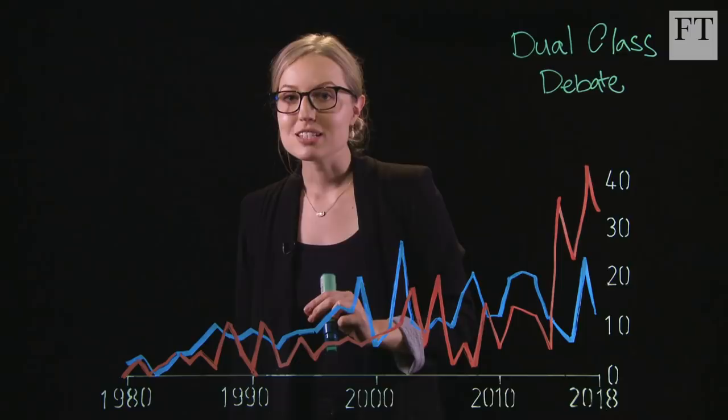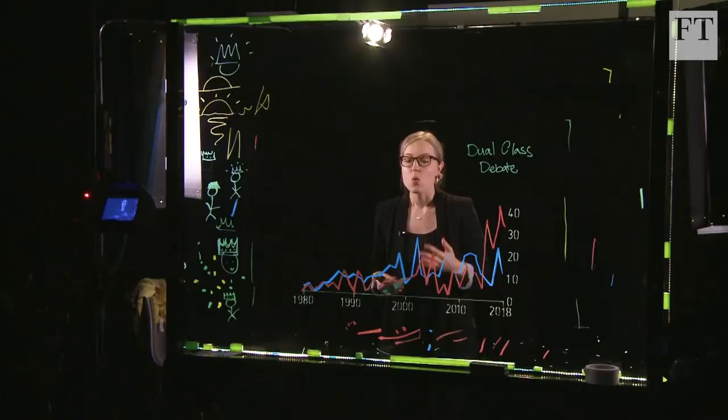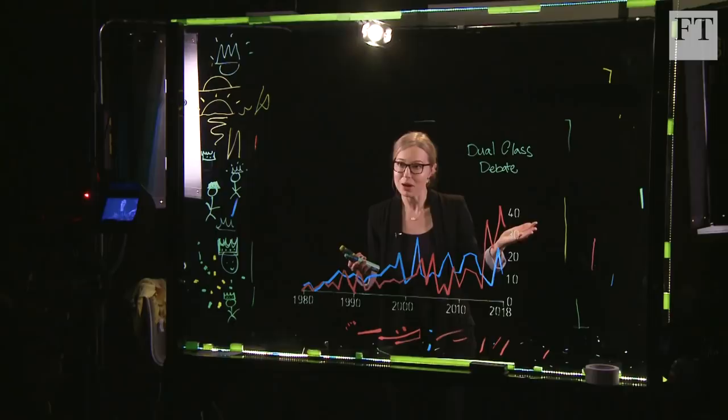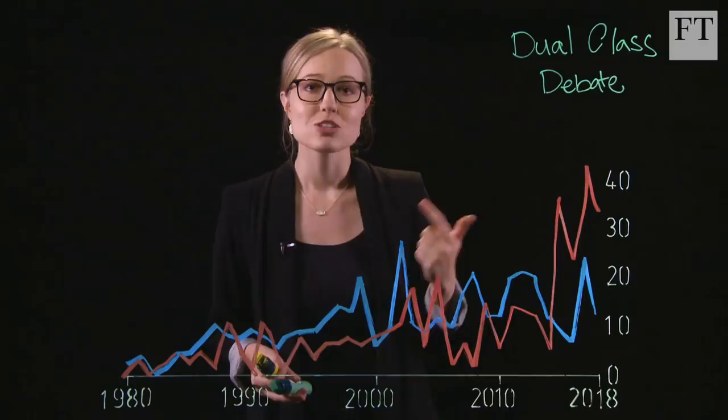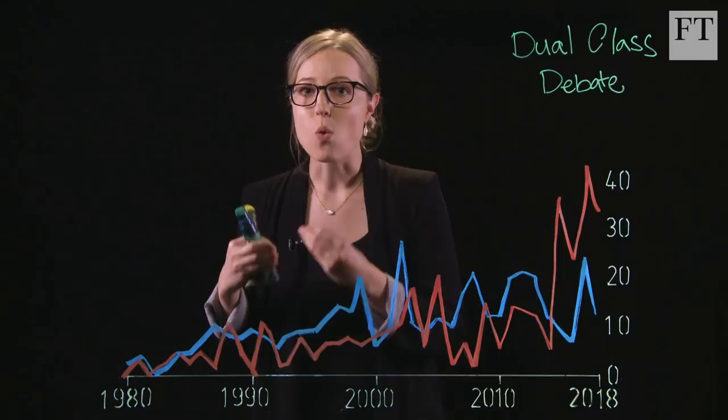But before we explain that, let's just go back and remember what a share is. When a company goes public, it sells shares to the broader public. When an investor buys a share in a company, what they're really buying is an ownership stake. And the way that an investor expresses that ownership is with a vote. So if the investor doesn't think the CEO is doing very well and the company has been performing poorly, they can say, hey, we're gonna vote this guy out so we can bring somebody new in to turn things around. And that's when an investor gets one vote for each share that they buy.